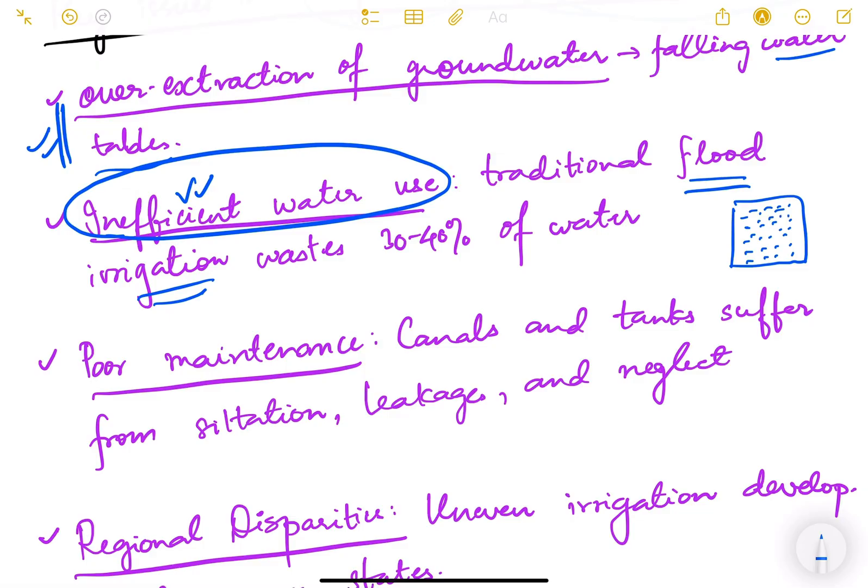Because of this, there is a lot of losses in the water—maybe evaporation loss and many other types of losses. It is estimated that almost 30 to 40 percent of water is lost because of this flood irrigation technique.